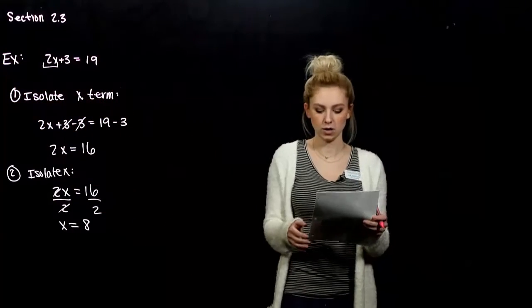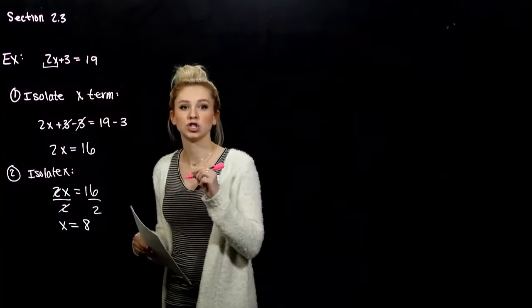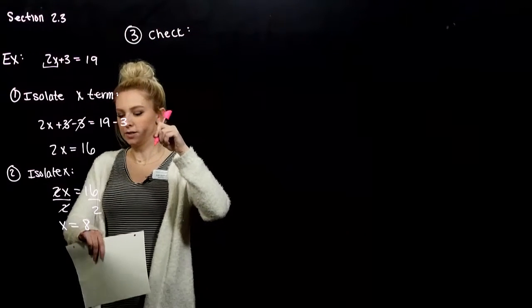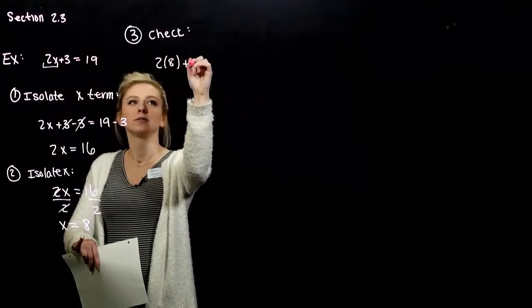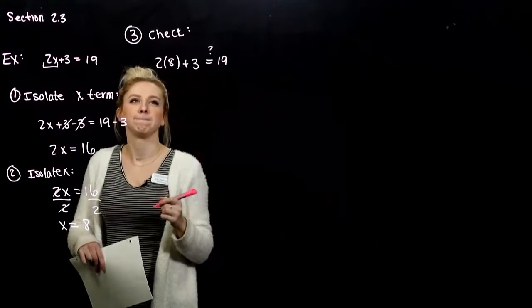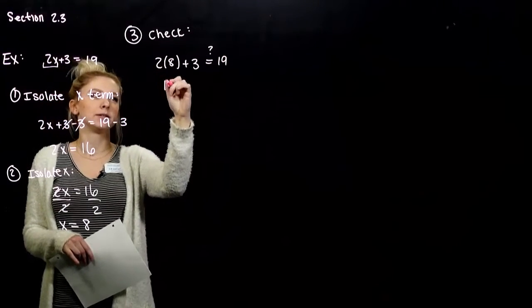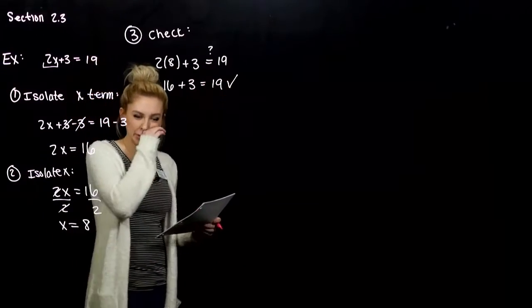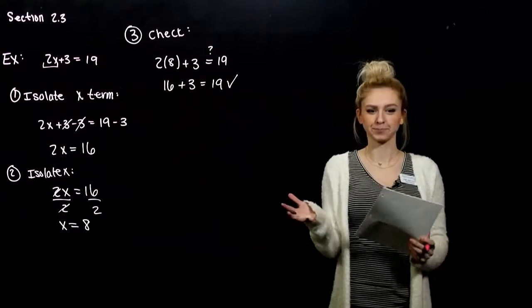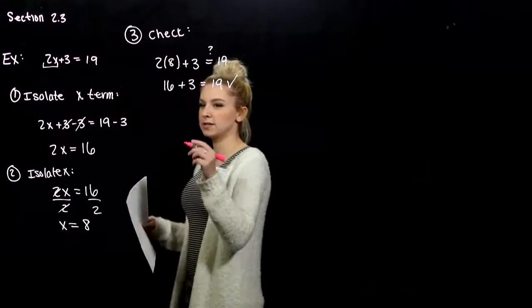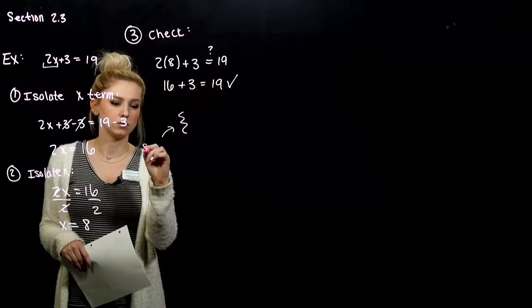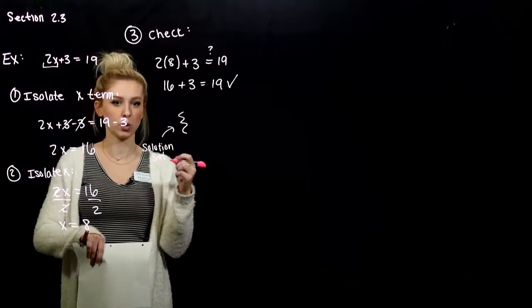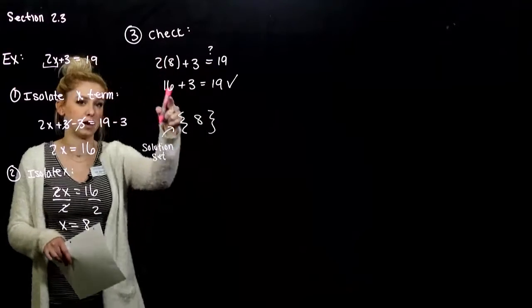Whenever we solve any equation, we want to plug it back into the original and check, make sure that it actually works. Is it true that 2 times 8 plus 3 really equals 19? 8 times 2 gives me 16, plus 3 is 19 — yes. You could put it in set notation if you prefer. Our solution set — things that make this equation true — we can only plug in 8, and we verified that it worked with that check.